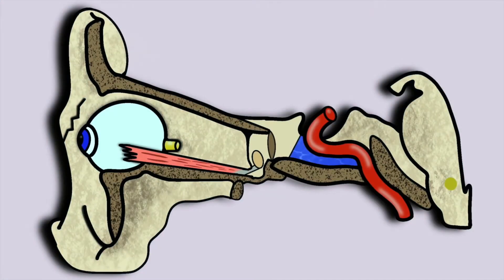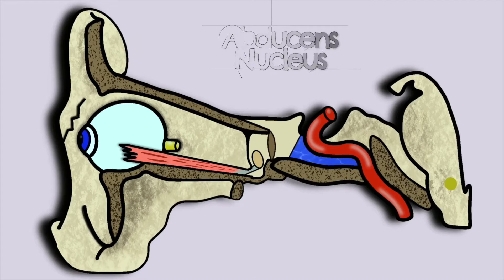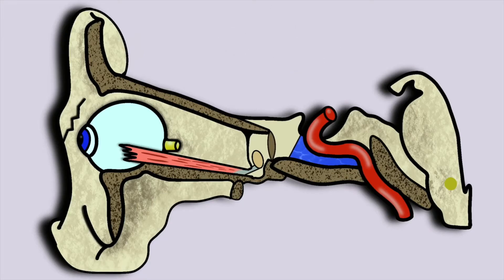In this cross section we can trace the course of the abducens nerve. It arises in the abducens nucleus, which is located below the fourth ventricle in the caudal portion of the pons. The abducens nerve exits the brainstem at the junction between the pons and the medulla. The nerve then travels through the subarachnoid space and pierces the dura mater.